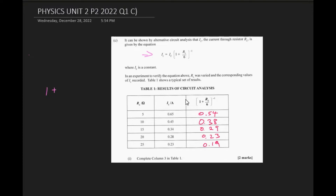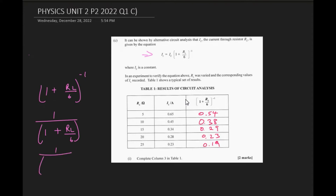Bear in mind, the minus one here means the inverse — in other words, you can write it as one over bracket (1 + rl), which we already know. You might be wondering how to enter this negative one in the calculator: it simply means the inverse, so one divided by whatever it is. That's what it means.